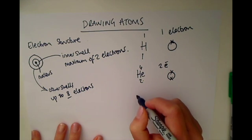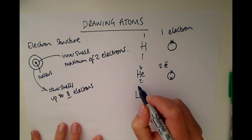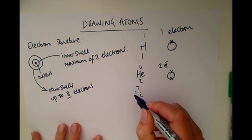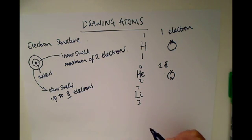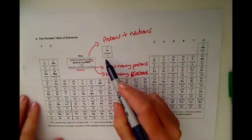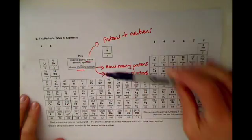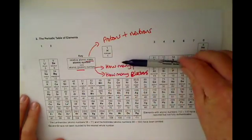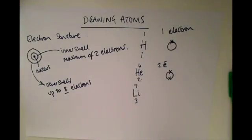The next atom I want to draw is lithium, which is getting bigger and is one period down on the periodic table. As you go down the periods, you gain an electron shell. So hydrogen and helium are right at the top. If we go down a period — down a row — to where lithium and beryllium sit, these have an extra shell.